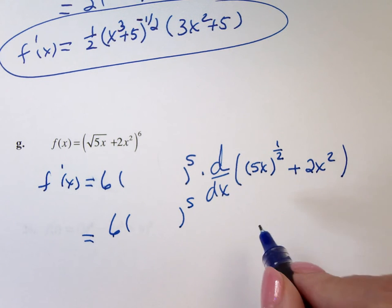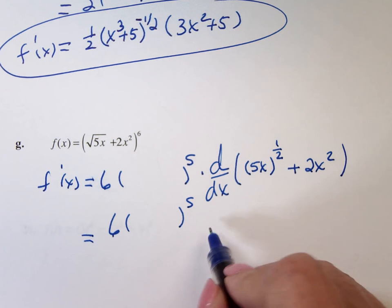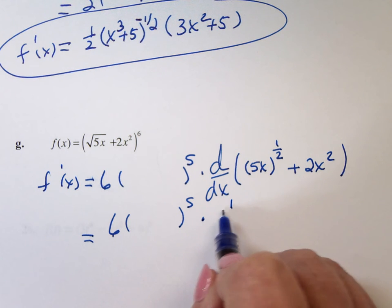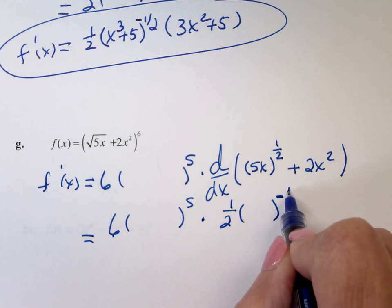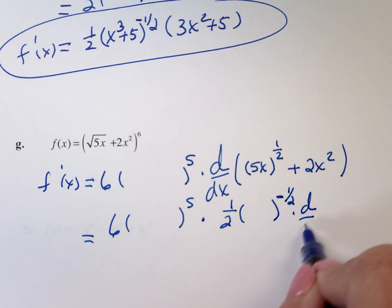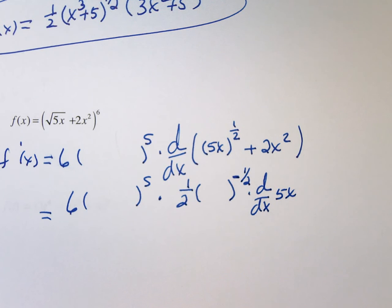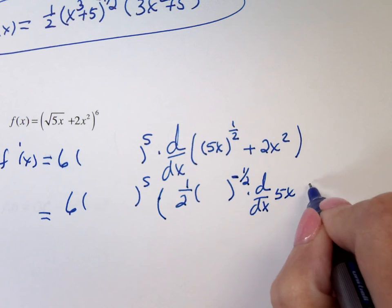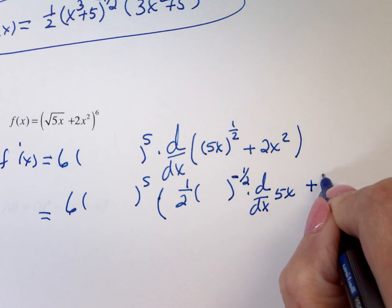Which is 6 times the blob. And then I look at this thing and say, what's the derivative of 5X to the one-half power? Well, the derivative of 5X to the one-half power is one-half times the blob to the negative one-half times the derivative of 5X. So it's going to be times this whole thing, plus, what's the derivative of 2X squared? 4X.